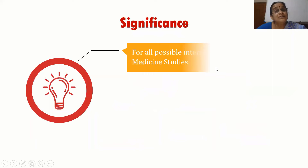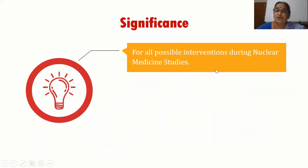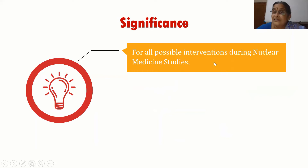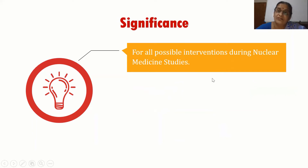Firstly, what is the significance of this topic? It is to understand possible interventions and apply them during nuclear medicine procedures — like the classic intervention in the diuretic renal study using 99m technetium DTPA. Why is it used? The mechanism of uptake of DTPA and its clearance has to be understood.